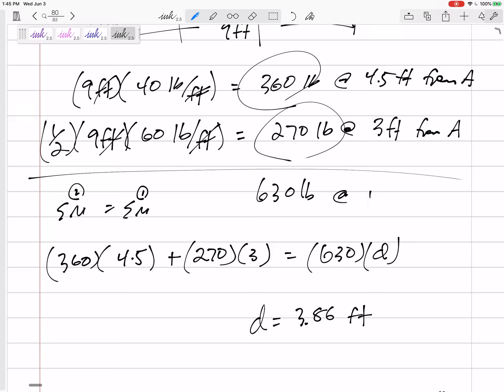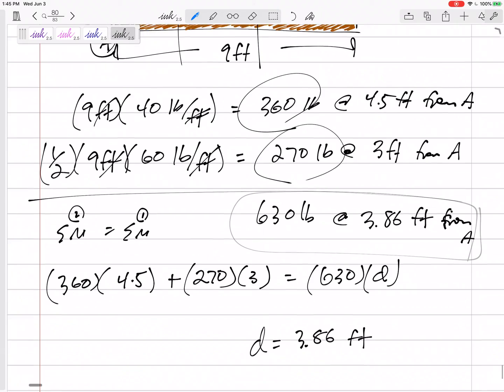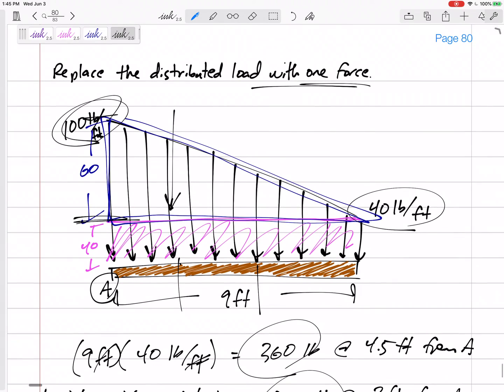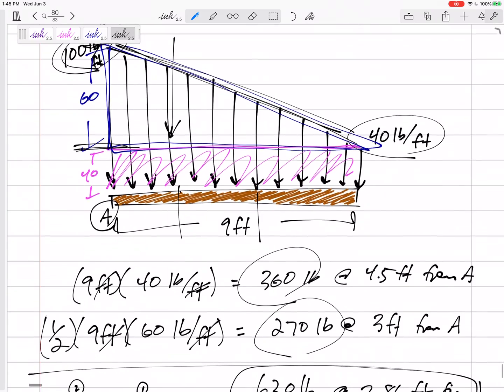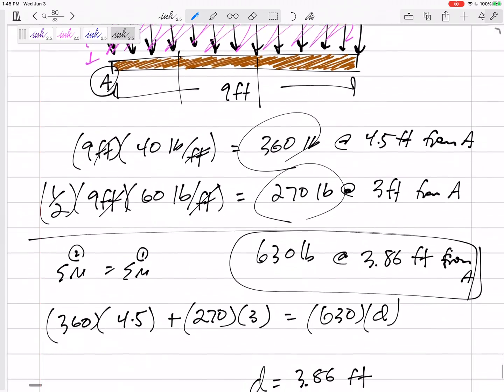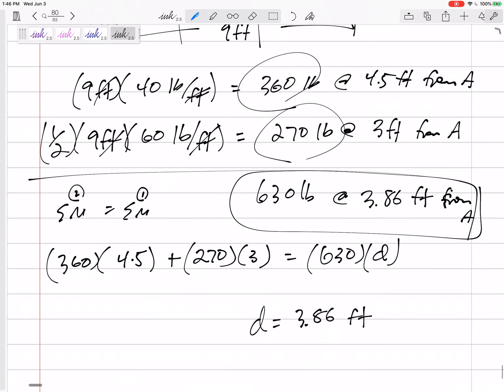So 3.86 feet from A. There we go. 630 pounds, 3.86 feet. That is how I would do these linear, like this is just a line, not curved, not squared or anything, a linear line from one height to another height. Just think about it as a triangular distributed load on top of a rectangular distributed load. All right.